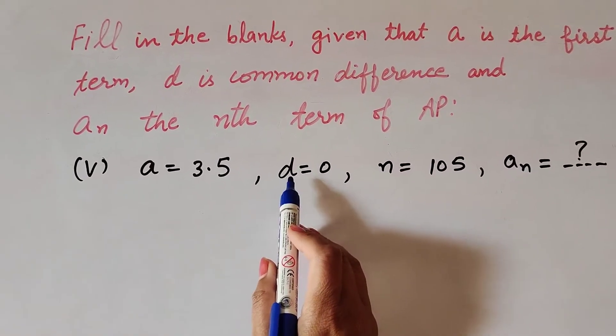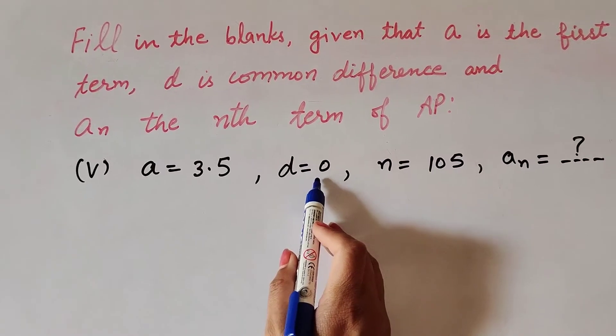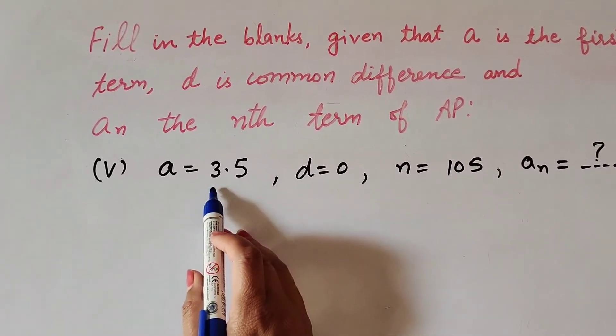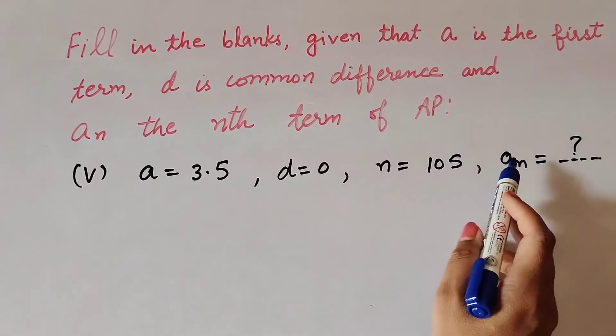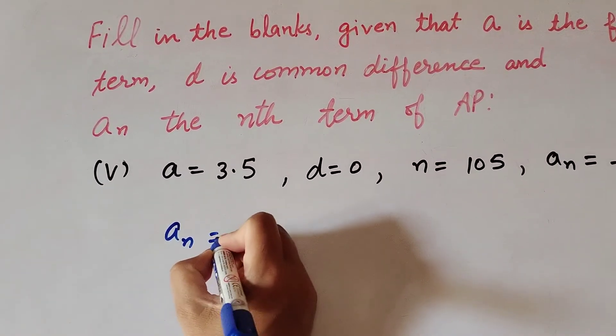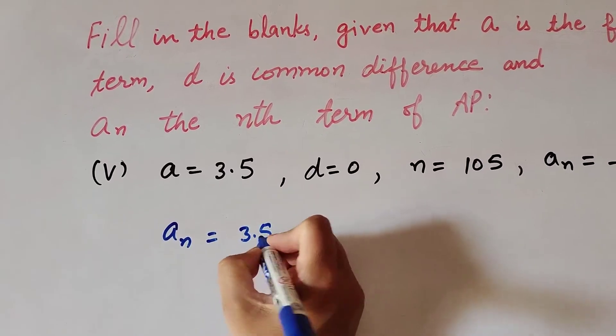In this problem, common difference d is equal to 0. So when common difference d is 0, it is added to the first term and we get the same answer. So the nth term of AP, an, equals 3.5.